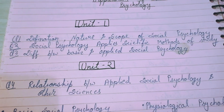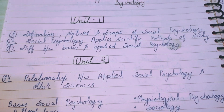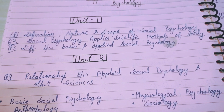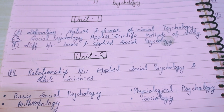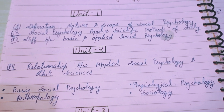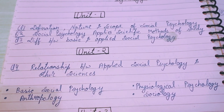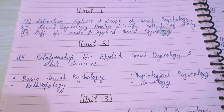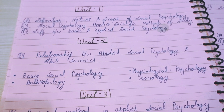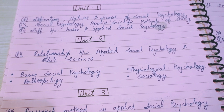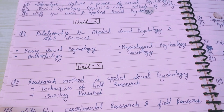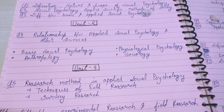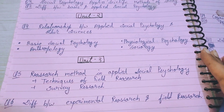Unit 1: Question 1 - definition, nature and scope of social psychology. Question 2 - social psychology applies scientific method of study. Question 3 - difference between basic and applied social psychology. Unit 2: Question 4 - relationship between applied social psychology and other sciences, including anthropology, psychology, and sociology.